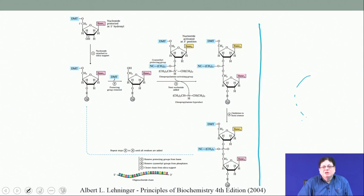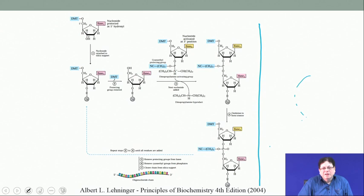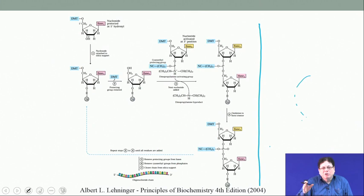Once protecting groups are placed on the functional groups — either the amine of one component and the acid of the other — the remaining amine and acid functionalities of the two amino acids are coupled. That is called the coupling stage. So basically there are three stages: protection, coupling, and deprotection, and you cycle through these, then finally strip off all protecting groups in a common deprotection step.